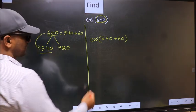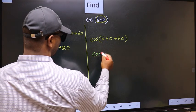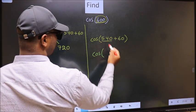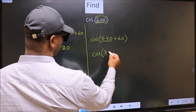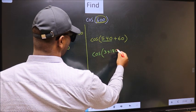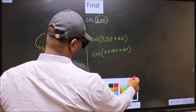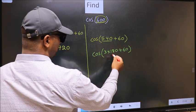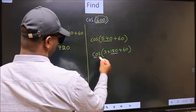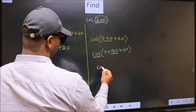Next, cos. In place of 540, now we should write 3 into 180 plus 60. Next, here we have 180. So, cos is not going to change. It will remain cos.